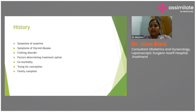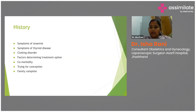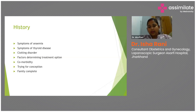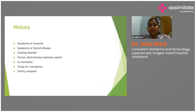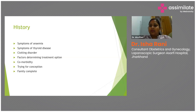In history taking, we should ask about symptoms of anemia — easy fatigability, weakness, and lethargy. Ask about symptoms of thyroid disease, such as feeling cold even in hot weather or body swelling. Regarding clotting disorders, if they have a known disorder we note it; if not, we ask since when they have experienced heavy menstrual periods. If it started at menarche, we should suspect a clotting disorder, or ask about family history of any bleeding disorder.